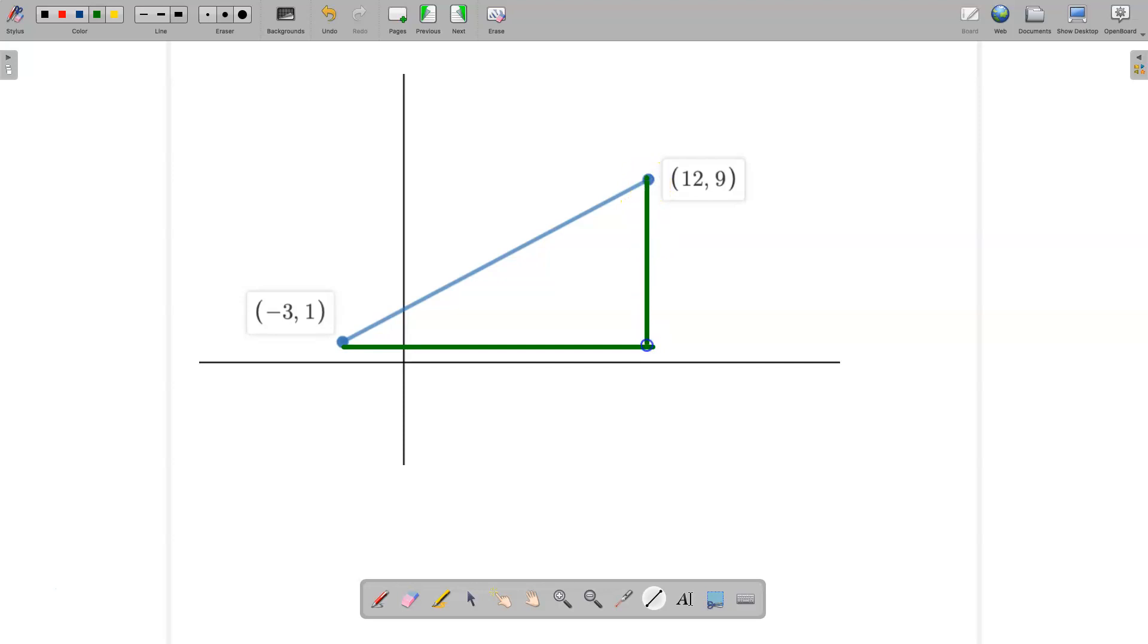I'm going to do what we did a minute ago. We're going to do this number here take away this number here. Now 12 take away -3 ends up being 15, so I've got 15 on the x-axis. I'm going to do the same with the y, so 9 take away 1 is 8.